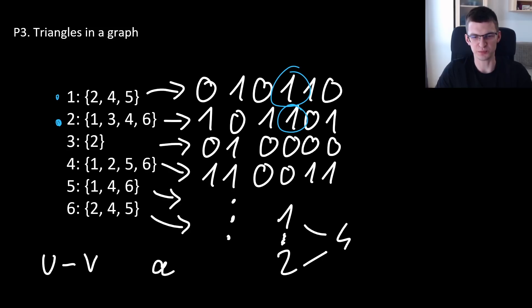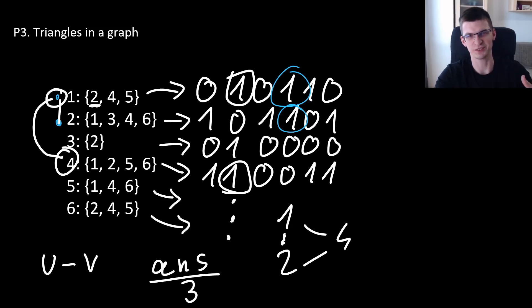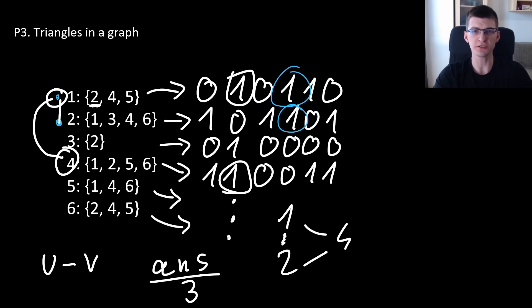One last detail is at the end you should say that you print answer divided by 3 because every triangle you will compute 3 times. If there is triangle ABC, for a pair AB you will detect that there is C in common neighborhood, common adjacency list. Then for AC and for BC. Like in our example, for pair 1, 2 you detected that there are edges to 4 and also there is edge between 1 and 2. But also for a pair 1, 4 you detected that there is common bit 2 here and there and there is edge between 1 and 4. So you will add to the answer plus 1 and so on. So every triangle is computed 3 times.